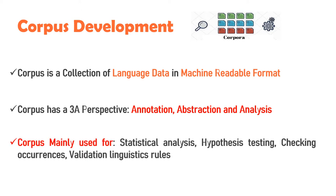Corpus has two types: first, text and second, spoken. A text corpus is a large and structured set of text. The speech corpus or spoken corpus is a database of speech audio files and their text transcription. Spoken corpus are used to study research in phonetics, conversation analysis, dialectology and validation of linguistic rules.